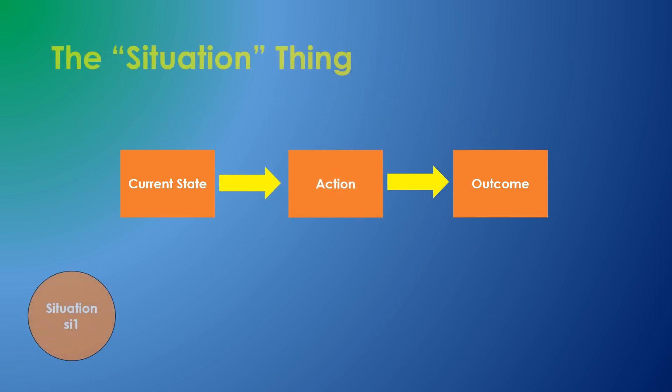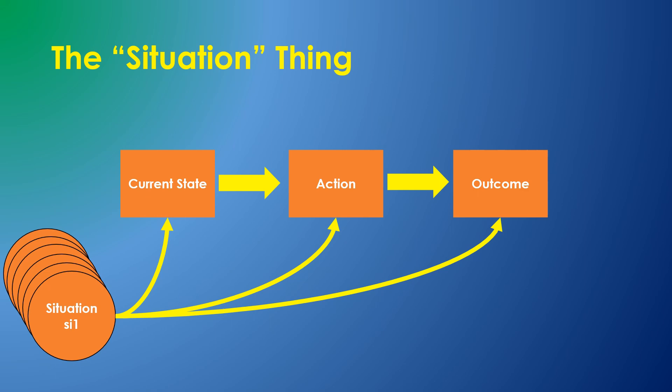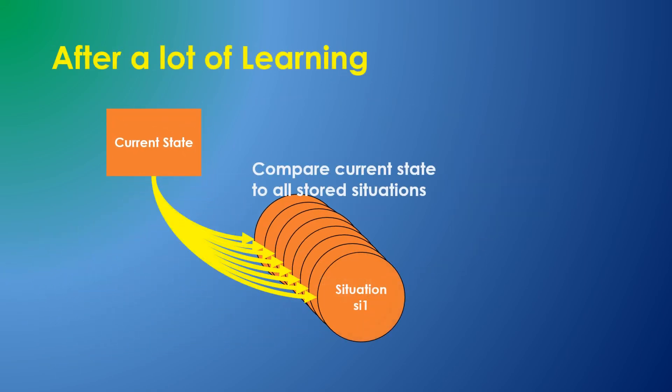To store the needed information, I added a new group of things to the knowledge store which I call a situation thing. Situations have reference links to the current sensory inputs, an action, and an outcome. Sally accumulates many situation things. After that, the current state can be compared against all situation things and the best match is selected.